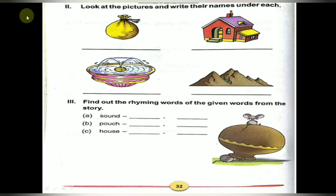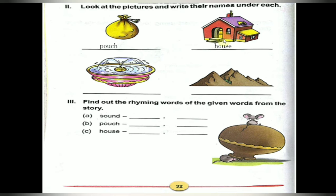Come to the next exercise: Look at the pictures and write their names under each. What is this picture children? Pouch — P-O-U-C-H pouch. Look at this picture — what is it? H-O-U-S-E house.